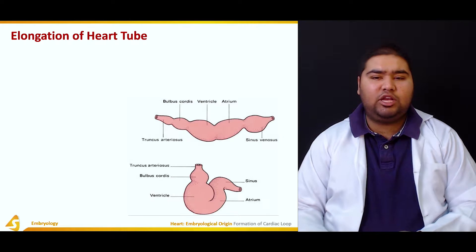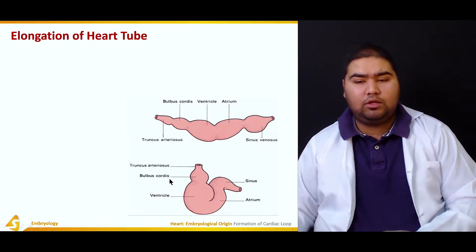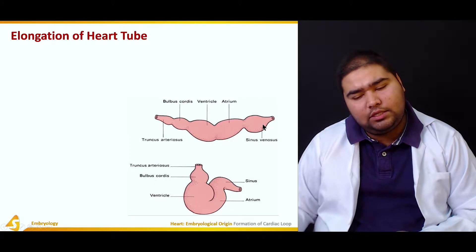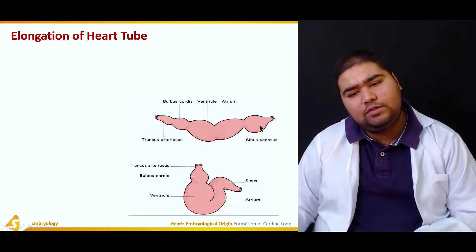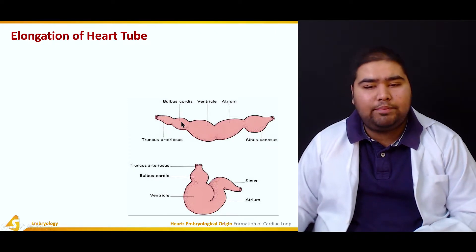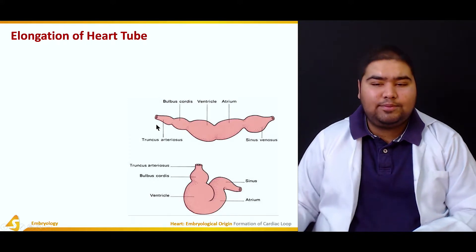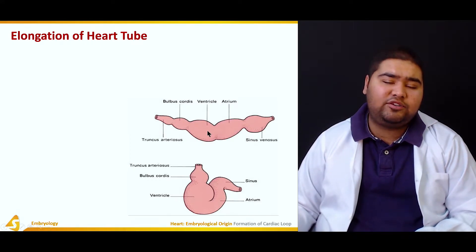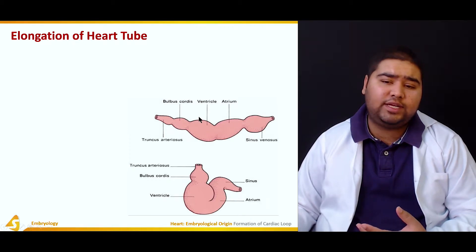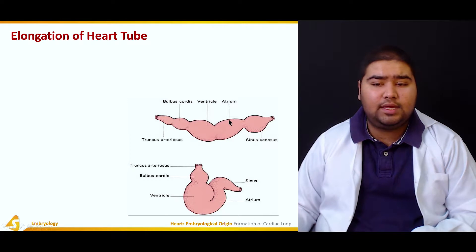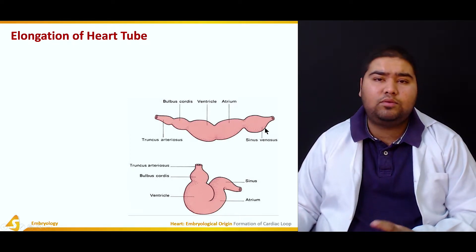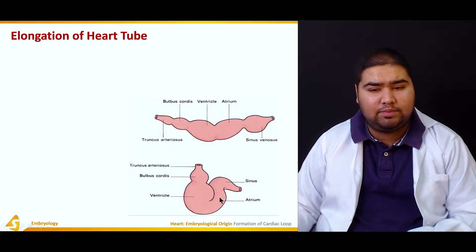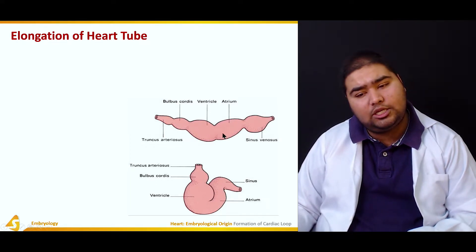First, we have the elongation of the heart tube. Looking at the figure, this is the caudal end and this is the cranial end of the heart tube. The caudal end consists of the sinus venosus, the primitive atrium, the primitive ventricle, the bulbus cordis, and the truncus arteriosus. The bulbus cordis and truncus arteriosus help in the formation of the outflow tract; the ventricle helps form the ventricle; the atrium matures into the adult atrium; and the sinus venosus gives rise to the inferior and superior vena cava. This shows how the elongated heart tube bends upon itself to form the adult heart.